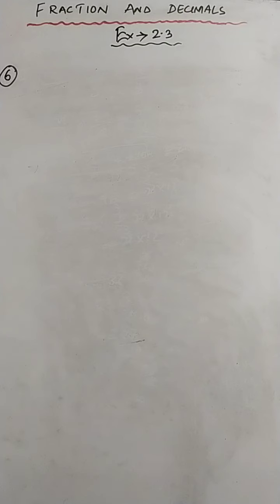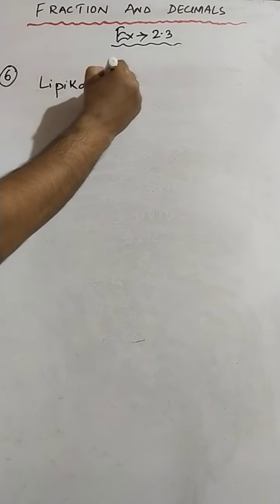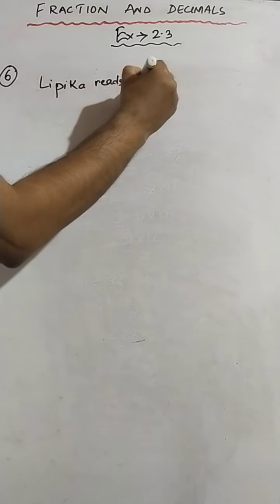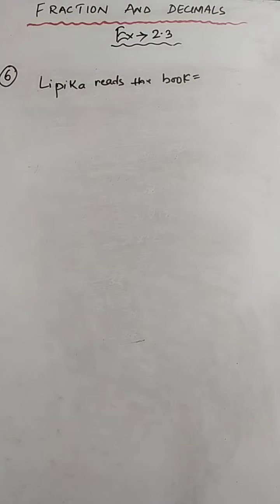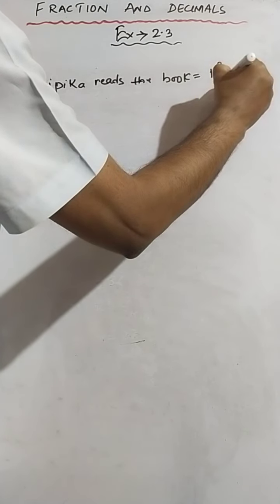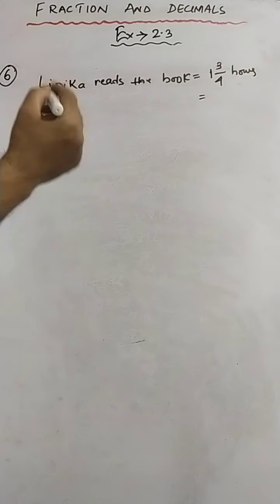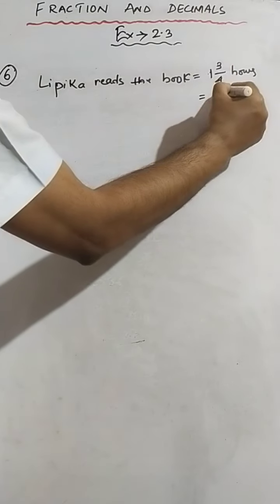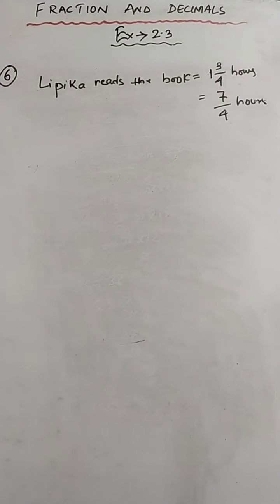The first sentence we'll write is: Lipika reads the book for one and three-quarter hours, which is in mixed fraction form. We'll convert it to improper form: 4 times 1 is 4, plus 3 is 7, so that is seven-fourths hours. This is per day.